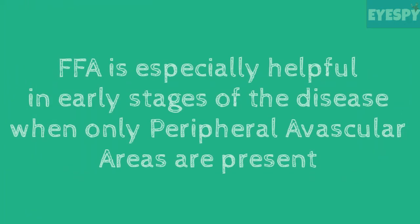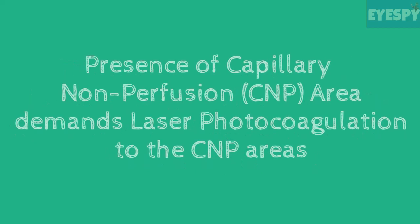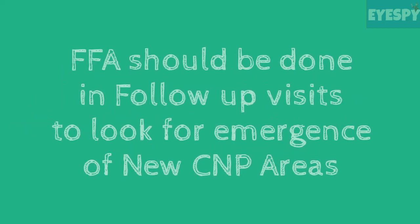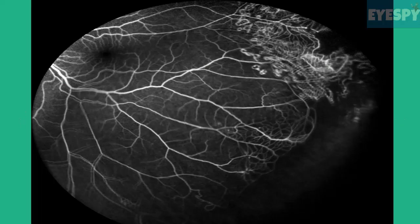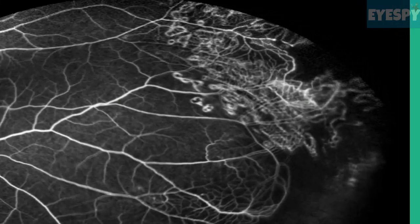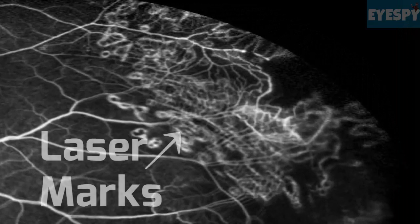FFA highlights the peripheral avascular area in the early stage of the disease when other signs are very subtle, and the presence of CNP areas demands laser photocoagulation. FFA should be repeated on follow-up visits to look for the presence of new CNP areas. We found this new CNP area on follow-up visit of this little girl and this area was subsequently lasered.